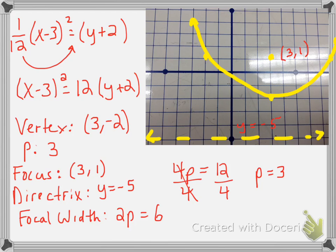If you worked this problem out correctly, you should have gotten the vertex at (3, -2) — since x is first, h is first, and since it's plus 2, k becomes negative 2. You should have gotten p equals 3. Since the parabola faces up, the focus goes up from the vertex — so we go up 3, adding to the y: negative 2 plus 3 is 1. For the directrix, it's y equals negative 5, because negative 2 minus 3 is negative 5. The focal width is 6, and since the directrix runs left to right, the focal width goes left to right. Plot those three points and graph your parabola.